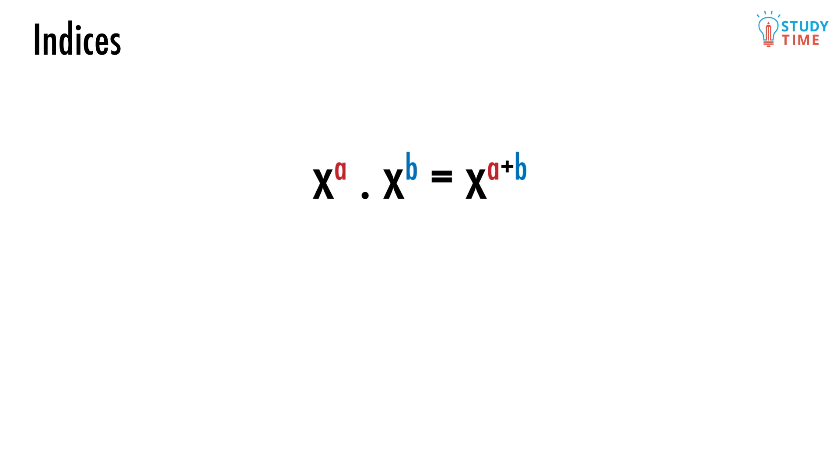The first index law works like this: x to the power of a times x to the power of b equals x to the power of a plus b. So let's say you were given this expression and told to simplify it.